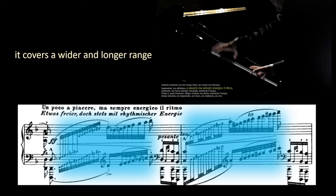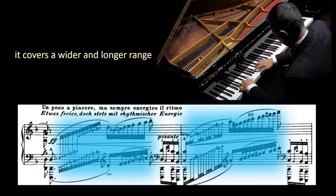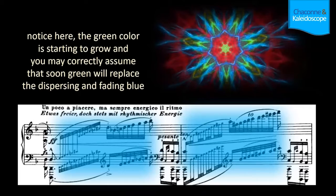Now let's see how the outburst of the demi-semiquavers takes place in the Chaconne. It covers a wide and longer range. The benefit of seeing this Chaconne in such a way is that all variations will come and go seamlessly, as I believe that is how Bach intended. The green color is starting to grow, and you may correctly assume that soon green will replace the dispersing and fading blue.